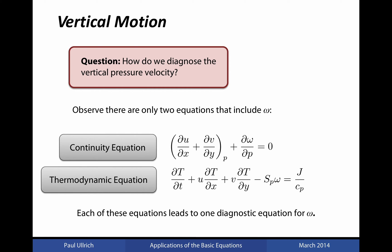So, how do we diagnose the vertical pressure velocity? If we go back to the set of equations in pressure coordinates that describe the dynamics of the atmosphere, we'll note that there are only two equations in which omega actually appears. Consequently, in order to calculate the value of omega, we will need to rely on one of these two equations. Each equation actually leads to a different diagnostic method for omega.